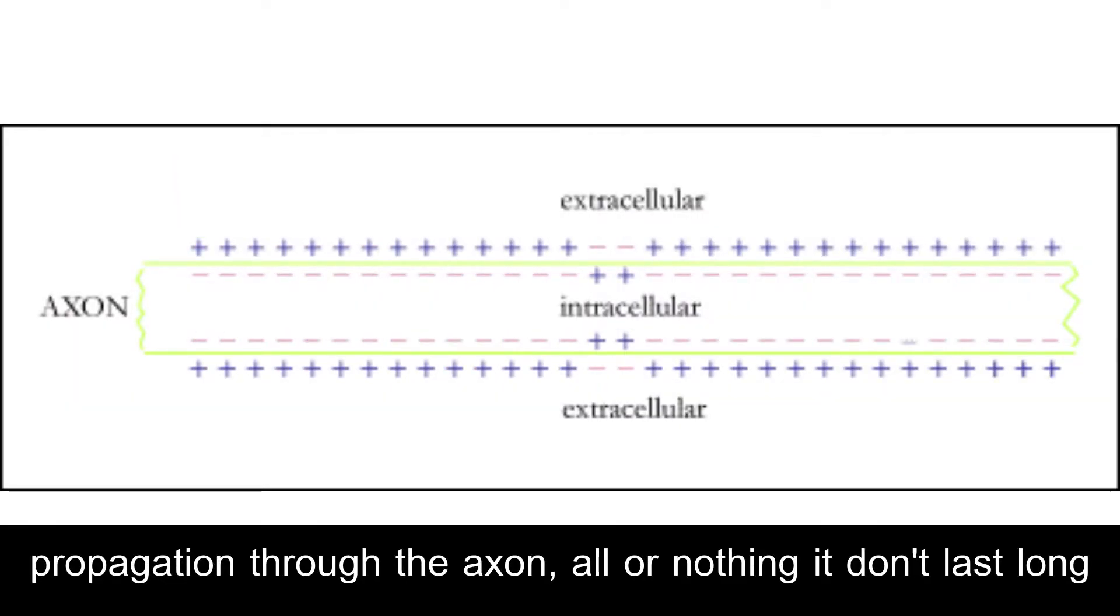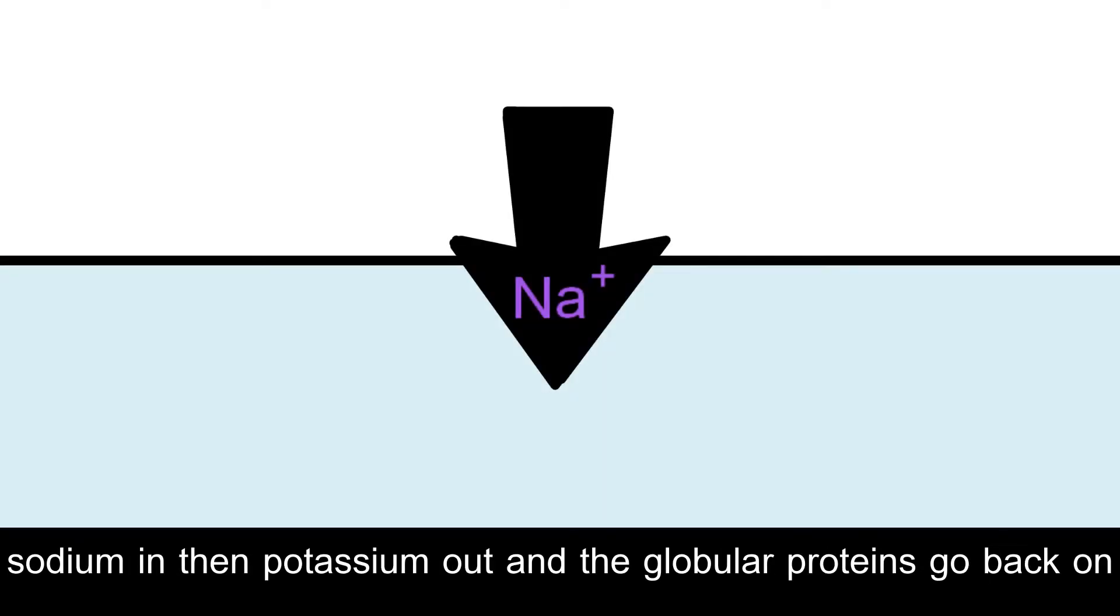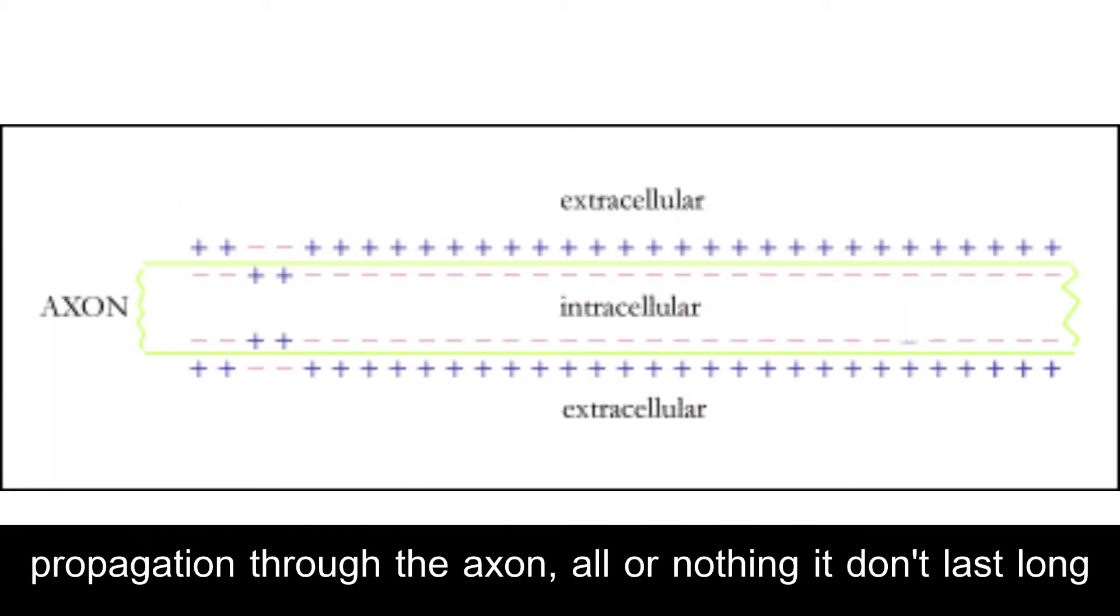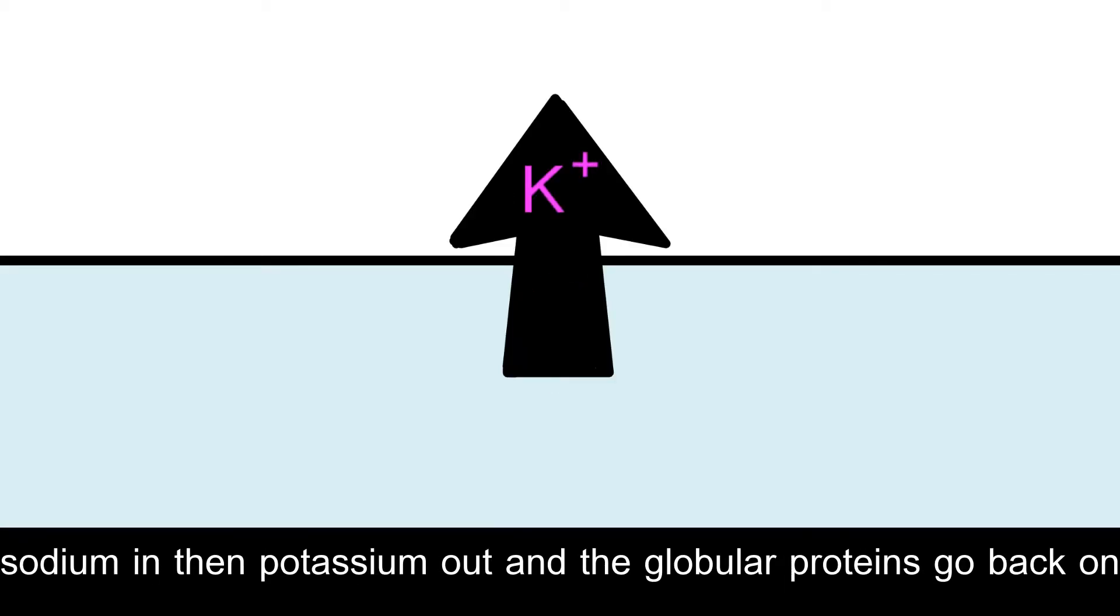Propagation through the axon, all or nothing, it'll last long. Sodium and then potassium out, and the globular proteins go back on. Propagation through the axon, all or nothing, it'll last long. Sodium and then potassium out, and the globular proteins go back on.